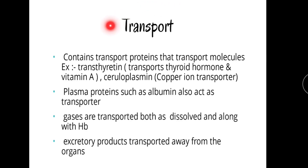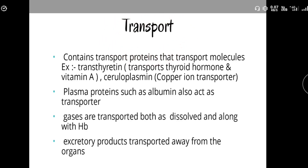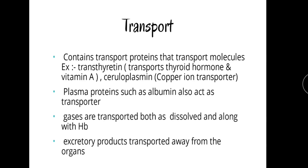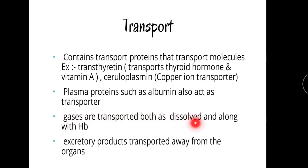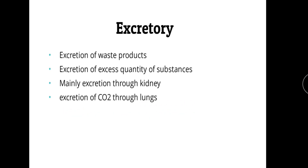For transport function, blood contains transport proteins. For example, transthyretin transports thyroid hormone as well as vitamin A; ceruloplasmin is a copper transporter related to Wilson's disease. Albumin also acts as a transporter, and gases are transported both in dissolved form and along with hemoglobin.